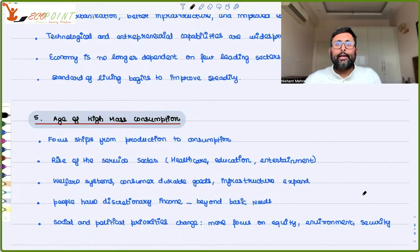Then comes the stage of high consumption. In this stage, the focus has changed from production to consumption. Focus has been on the rise in the service sector—healthcare, education, entertainment. People are consuming a lot of things. All of this was not possible few years before. The welfare systems which are coming, consumer durable goods are coming. Welfare system means you have better care by the government in terms of pension schemes, or better insurance systems are coming, better social security systems are coming. There is better infrastructure expansion.